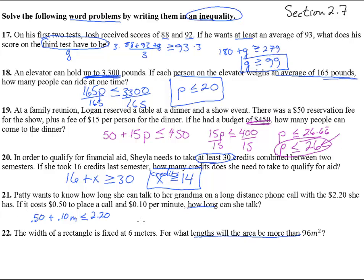Subtract $0.50 from both sides, and we get 0.10m is less than or equal to 1.7. Divide by 0.1 on both sides, and we get m is less than or equal to 17. So the number of minutes has to be less than or equal to 17. She could talk for 10, 12, 13, or exactly 17 minutes.